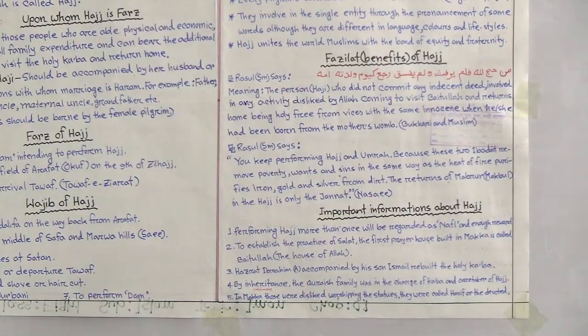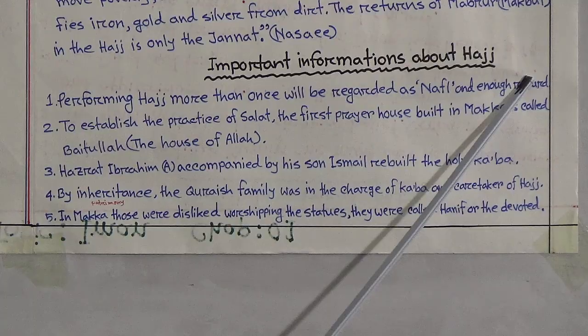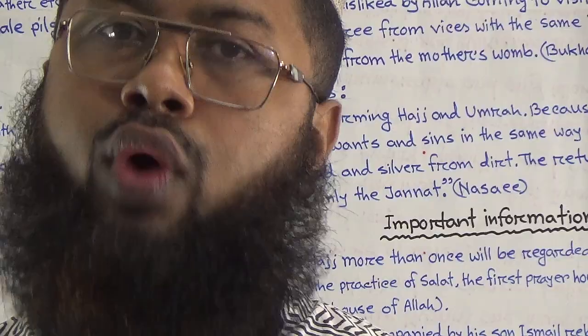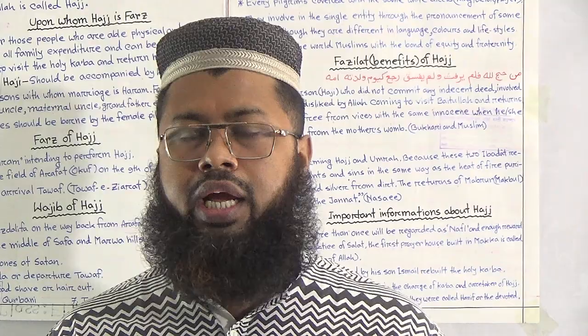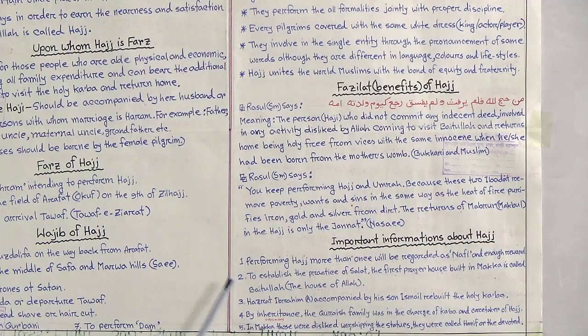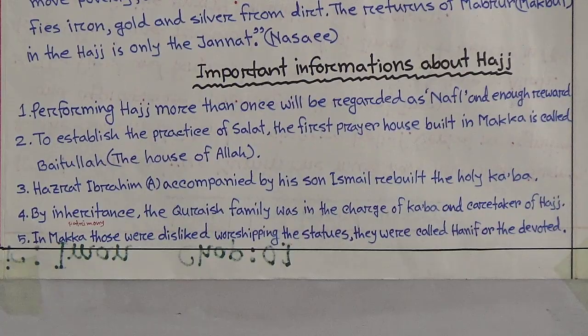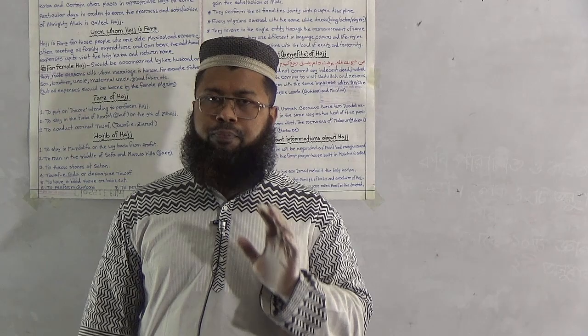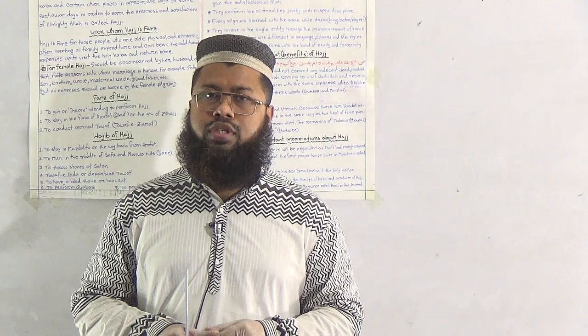Lastly, I will discuss some important information about Hajj. Number one, performing Hajj more than once is regarded as nafl and earns great reward — however many times you perform it, there is no problem and you will receive a lot of sawab. Number two, the first prayer house built in Makkah is called Baitullah, meaning the House of Allah. Almighty Allah ordered the angels and prophets for the building of Baitullah, and it is the first prayer house in the world.